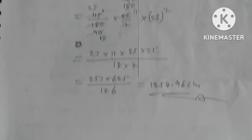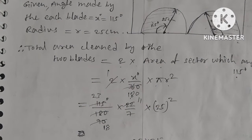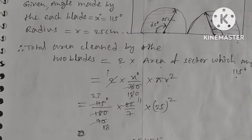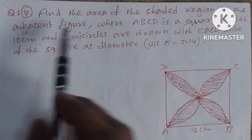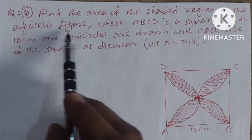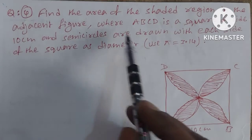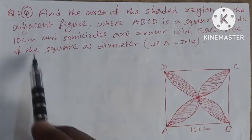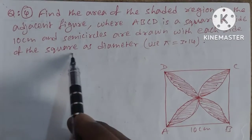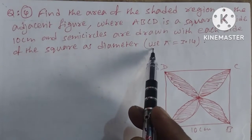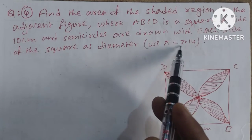So, the total area swept by the two blades through 115 degrees is 1254.96 cm² — that is the answer. Now, question number 4: find the area of the shaded region in the figure, where ABCD is a square of side 10 centimeters and semicircles are drawn with each side of the square as diameter. Use π = 3.14.